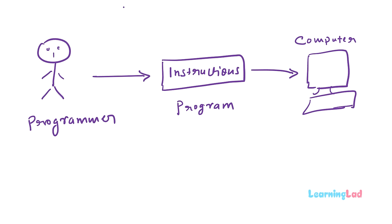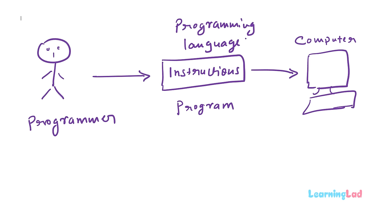We know that we need to give instructions to the computer so that it can work on them. But how can we give instructions to the computer, and in which language? The language in which these instructions are written, or in which a program is written, is called the programming language. There are several types of programming languages and we are going to see the details about them.